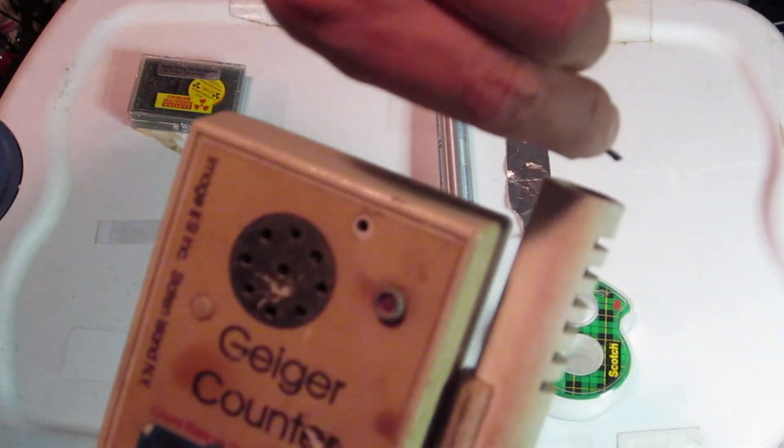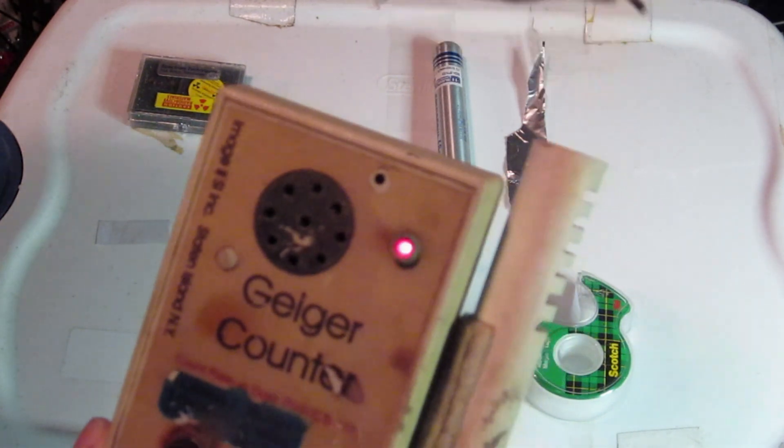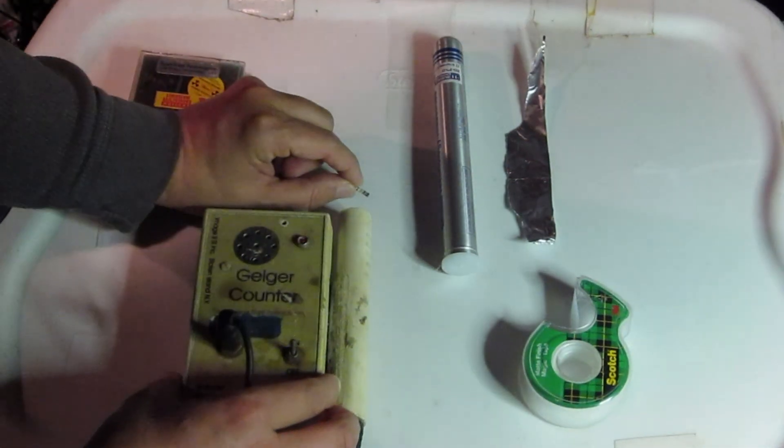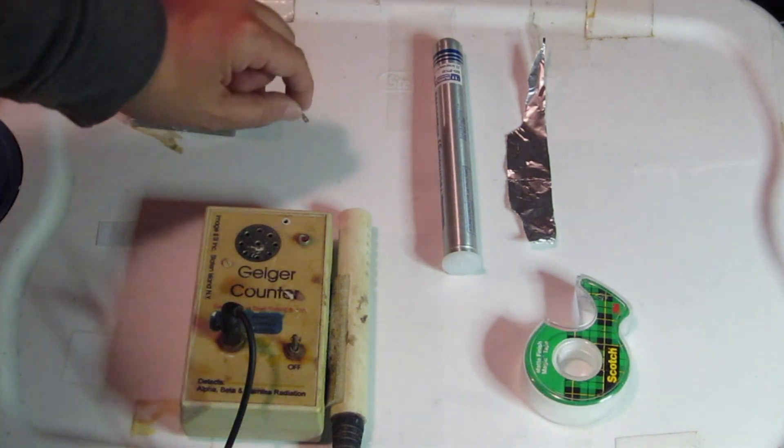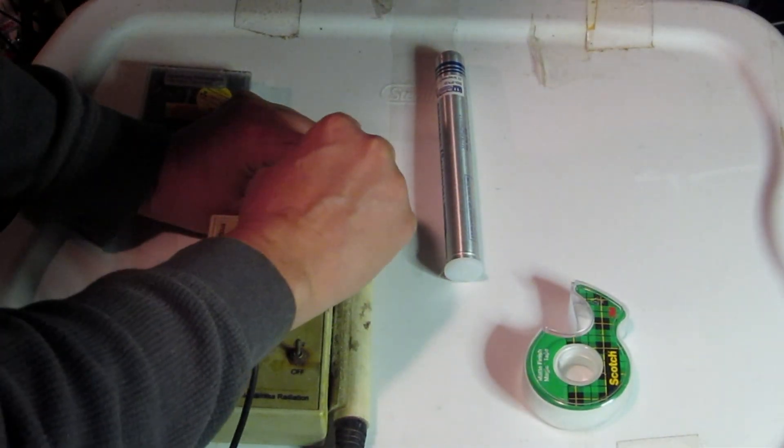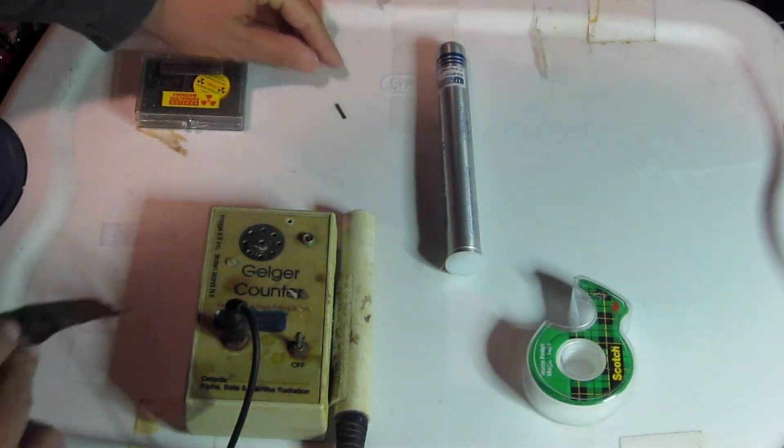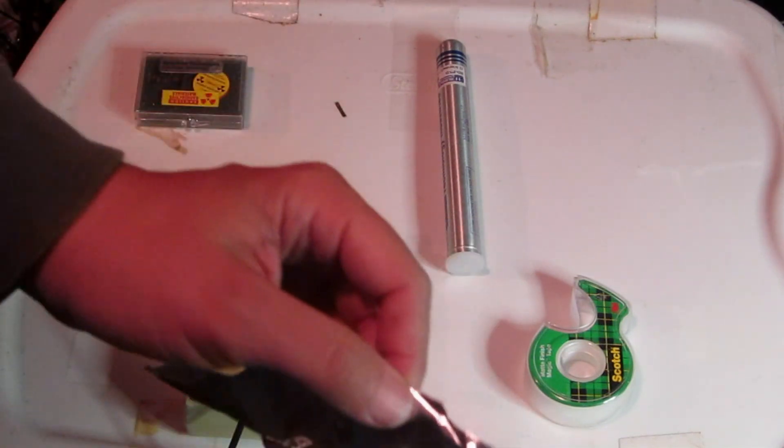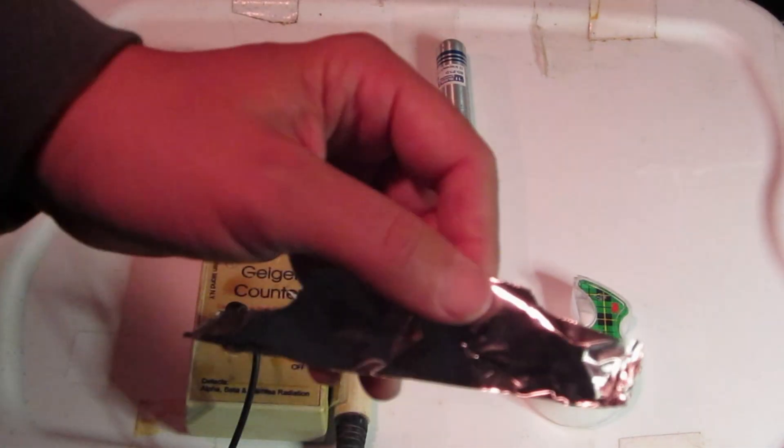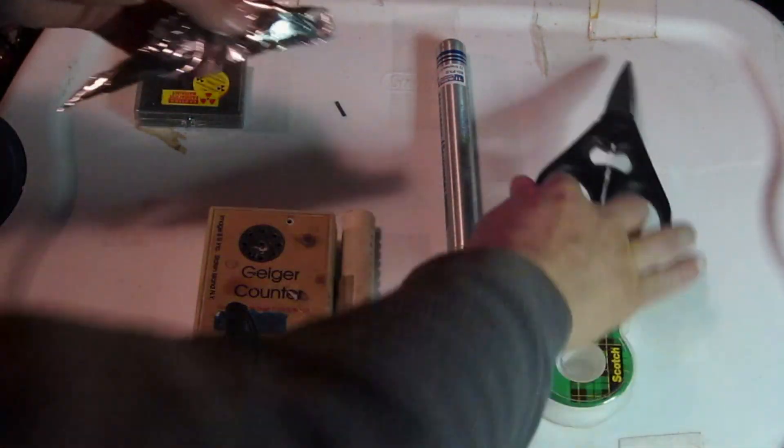So, make sure we're in frame. One side's a lot hotter than the other because the alphas are coming from there. Remember alphas are blocked by a piece of paper or even aluminum foil. So that's definitely the side the alphas are coming out of. And here's just a little piece of aluminum foil that I happen to have, and here's some scissors.